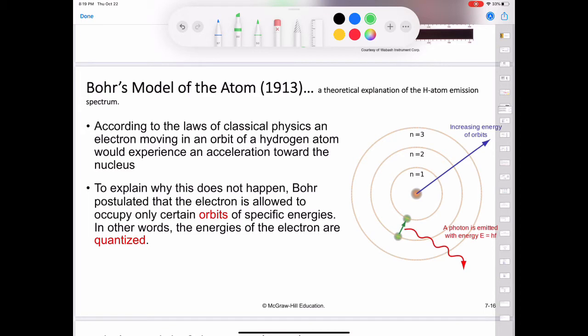In other words, the energies of the electron are quantized. An electron in any of the allowed orbits will not spiral into the nucleus and therefore will not radiate energy. Bohr attributed the emission of radiation by an energized hydrogen atom to the electron dropping from a higher energy allowed orbit to a lower one and emitting a quantum of energy or a photon in the form of light.